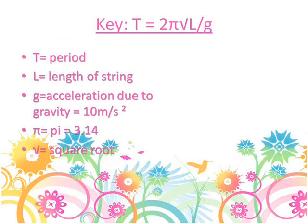The next formula that is going to be used is T equals 2 pi times the square root of L over g. Here is the key vocabulary. T is period, pi is 3.14, L is the length of the string, g is the acceleration due to gravity, which is 10 meters per second squared.